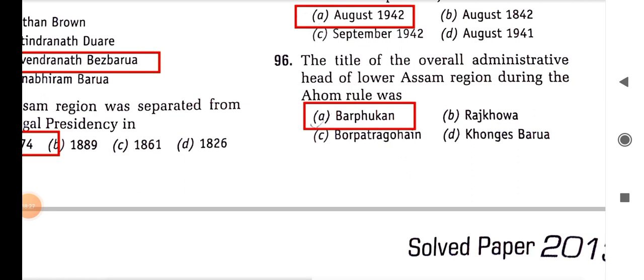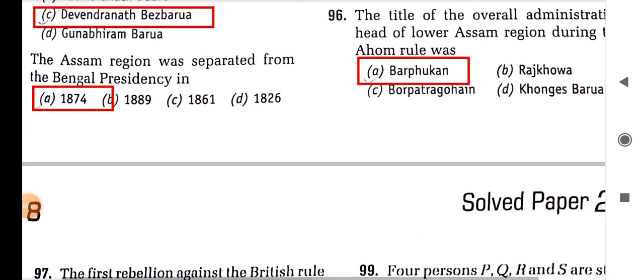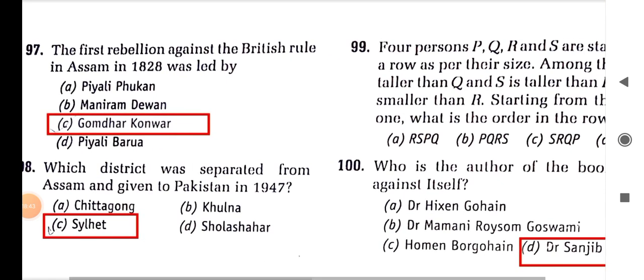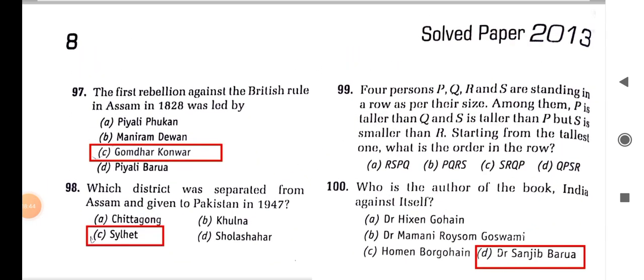This question can be solved by knowing that Lachit Barphukan was the important soldier in the Battle of Saraighat. The first rebellion against British rule in Assam in 1828 was led by Gomdhar Konwar.